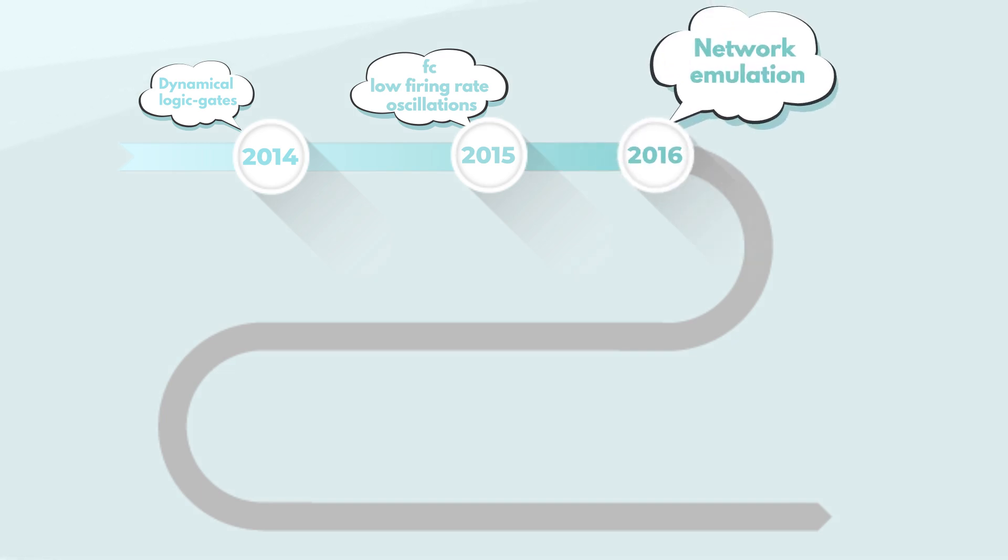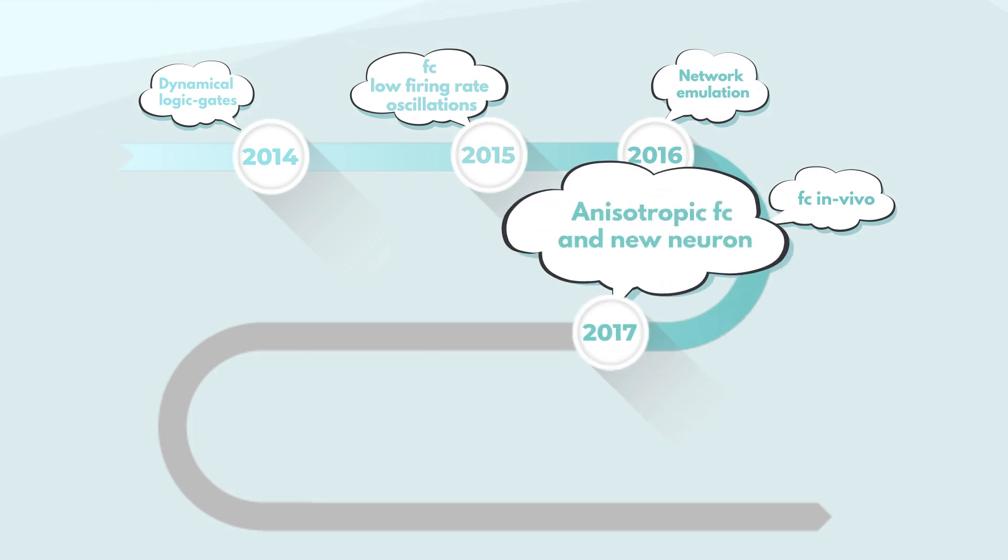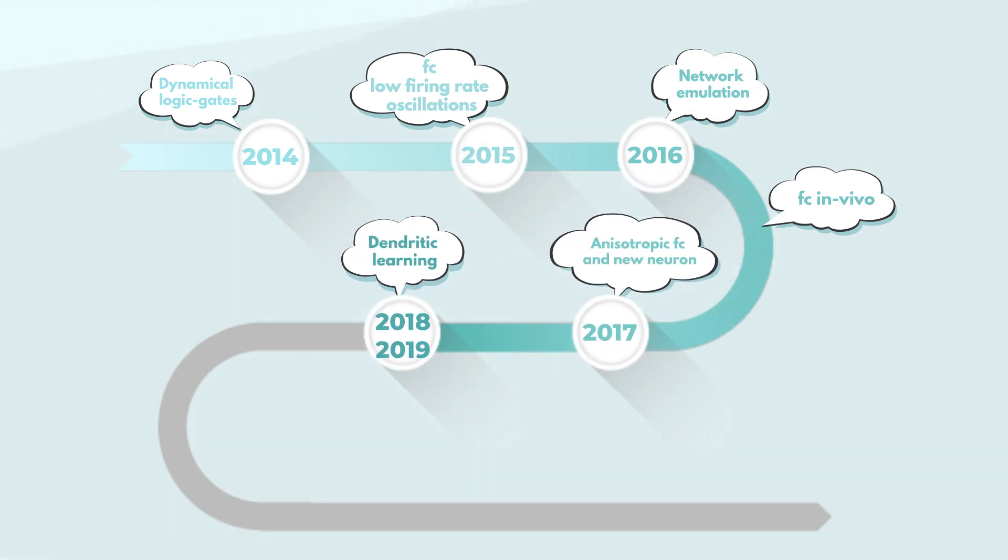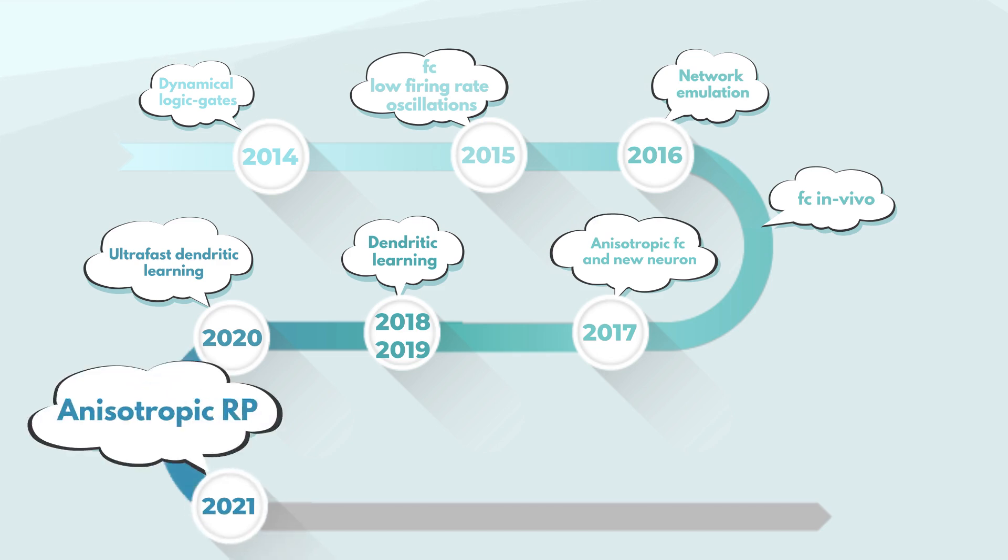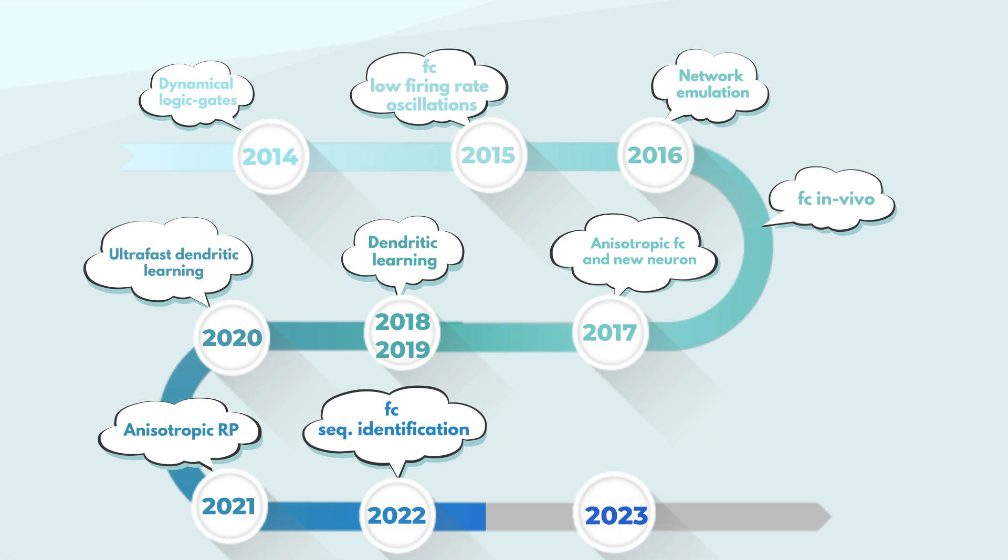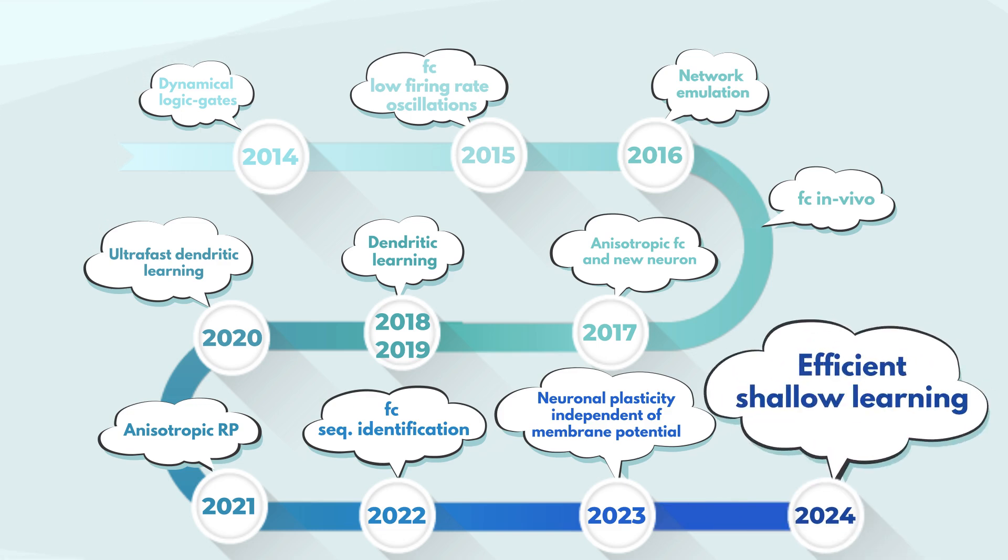Dynamical logic gates. fc, low firing, and oscillations. Network emulation. fc in vivo. Anisotropic fc and new neuron. Dendritic learning. Ultra-fast dendritic learning. Anisotropic refractory periods. fc sequence identification. Neuronal plasticity independent of membrane potential. Efficient shallow learning.